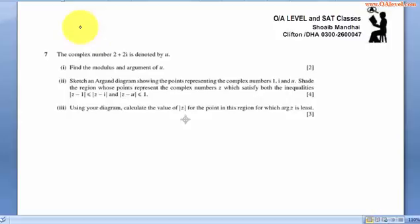For example, we have this question from 2002, question number 7, where complex number 2 plus 2i is denoted by u. We need to sketch an Argand diagram showing these points and shade the region. I am not solving the complete equation but just showing you the locus of this kind of equation.